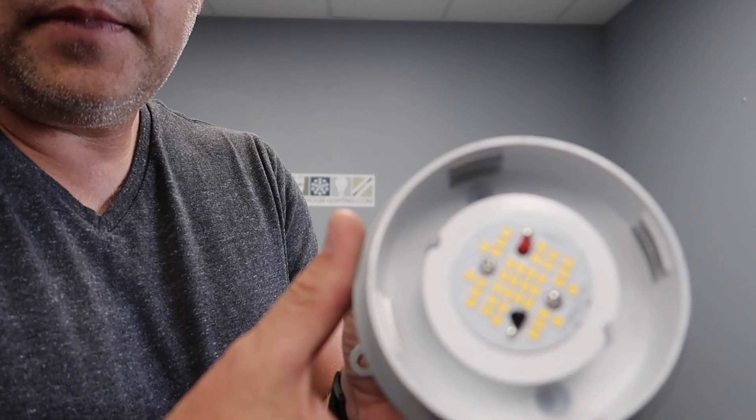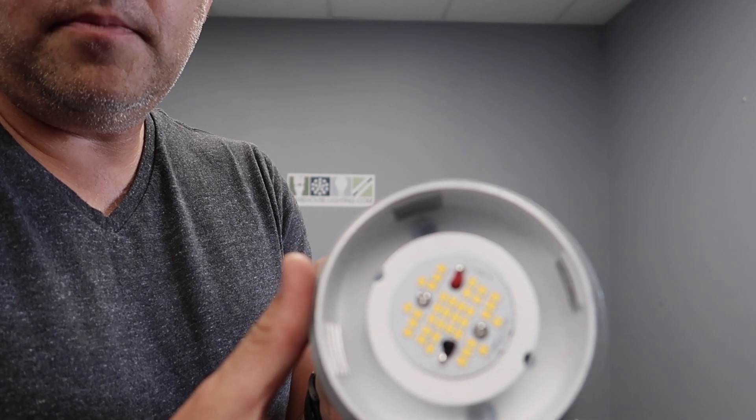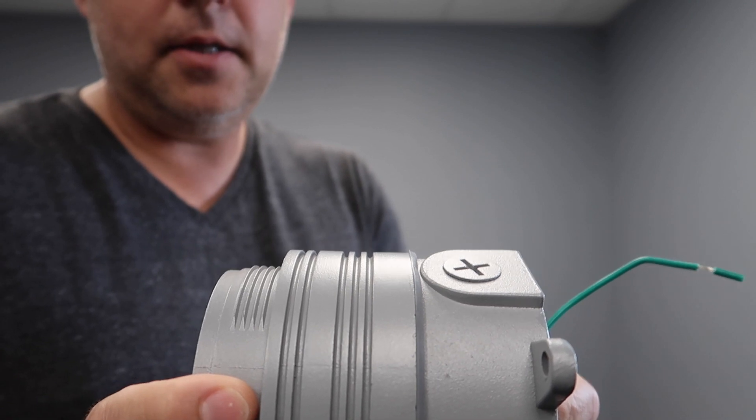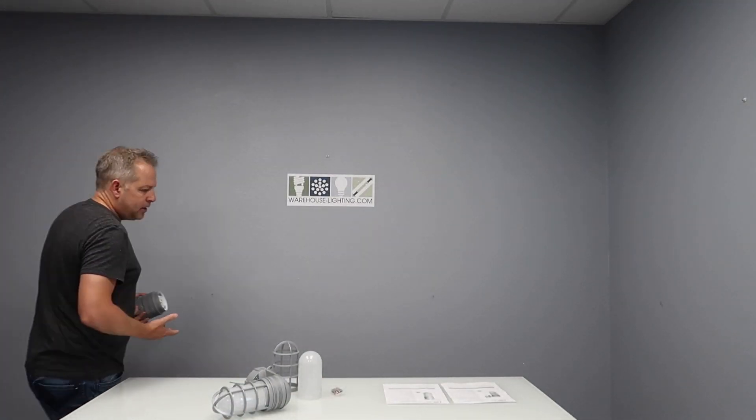If you look in there, there's the rubber gasket and the LED array. It also has a driver in the compartment at the end. It comes in two versions - a ceiling mount version and a wall mount version.